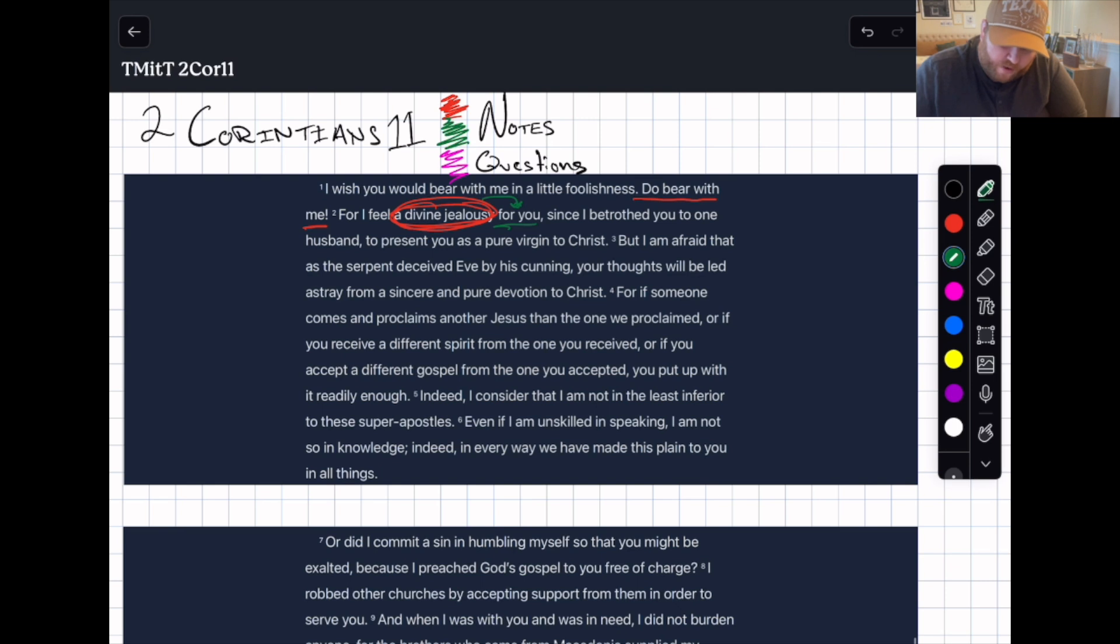Since I betrothed you to one husband, to present you as a pure virgin to Christ. Fascinating language here. So I married you to one husband, to present you as a pure virgin to Christ. What's Paul talking about here? Well, we know that the bride of Christ is the church. That's the language that's used.